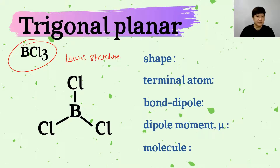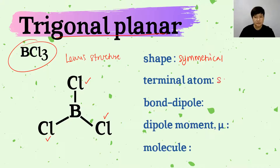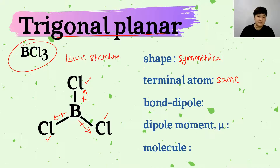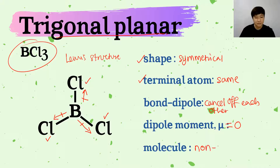For BCl3, the shape is trigonal planar with no lone pair on the central atom — a basic geometry — so the shape is symmetrical. All terminal atoms are chlorine, so the terminal atoms are the same. The bond dipoles between boron and each chlorine all point towards chlorine, since chlorine is more electronegative. Because the shape is symmetrical and all atoms are the same, the bond dipoles cancel each other out, mu equals zero, and the molecule is non-polar.